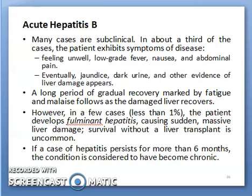If a case of hepatitis persists for more than 6 months, the condition is considered to have become chronic. To differentiate in a single line: acute hepatitis B lasts within 6 months, and if hepatitis B persists for more than 6 months the condition is considered chronic hepatitis B.